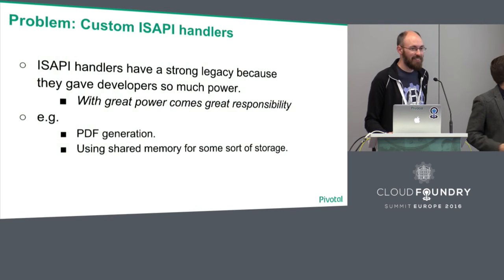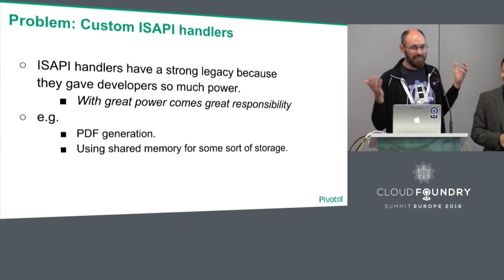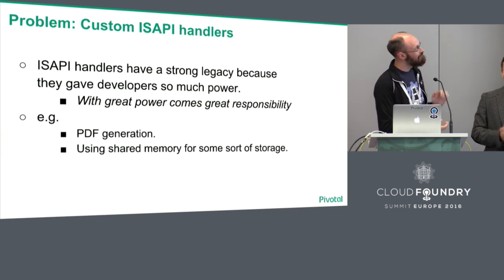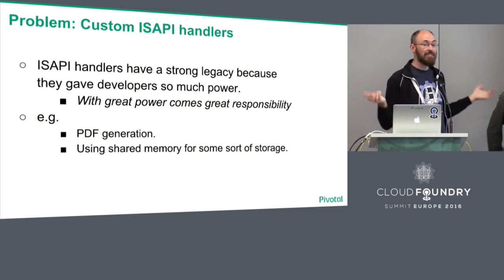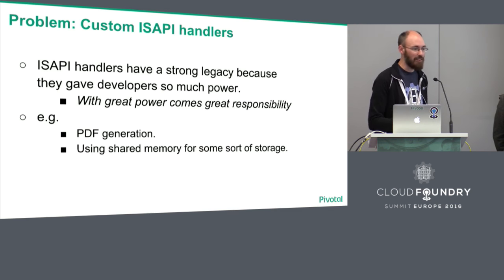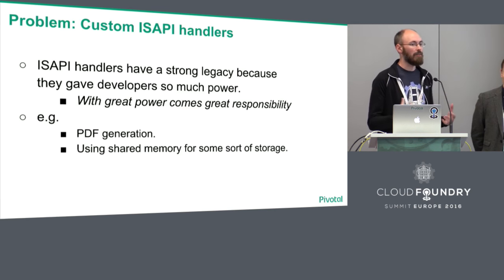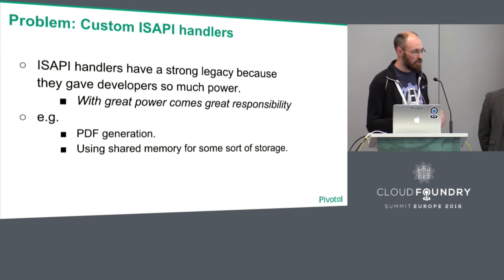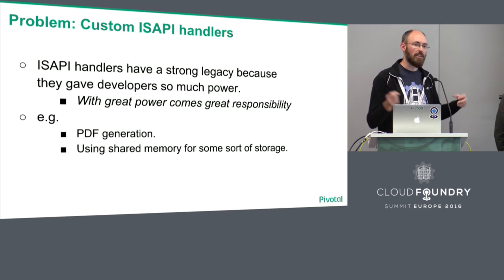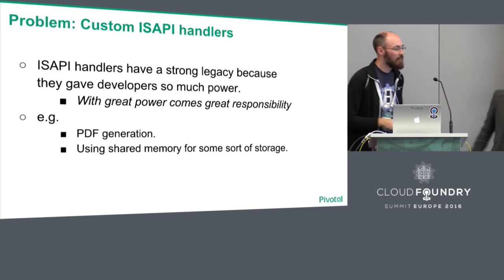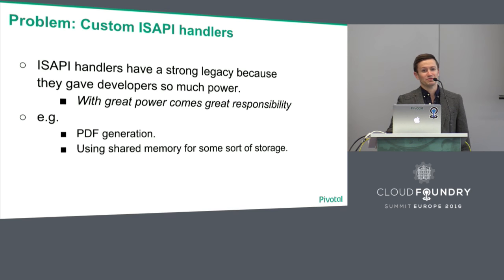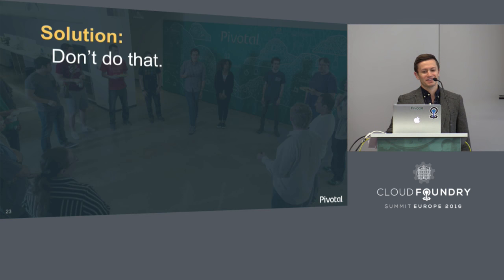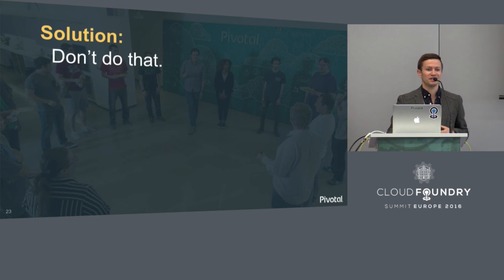We had a customer that had written a bunch of custom ISAPI handlers. They're great because they really empower developers to do anything — for example, they were generating PDFs of receipts being passed from an application. But they don't really work well with Cloud Foundry because they rely on IIS and some legacy aspects of IIS, shared memory, and all sorts of scary things when you're running multi-tenant, multiple applications on scaled backends. With great power comes great responsibility. The solution is very simple: don't do that. Custom ISAPI handlers can cause lots of trouble, and we don't recommend them at all — you can run into a lot of issues when migrating to a cloud-native system like Cloud Foundry. There are plenty of other ways to generate PDFs.